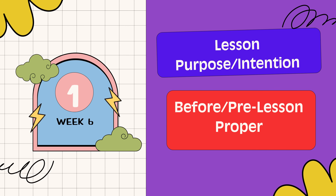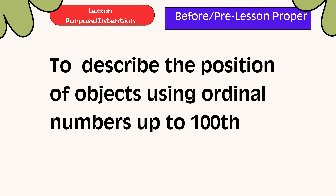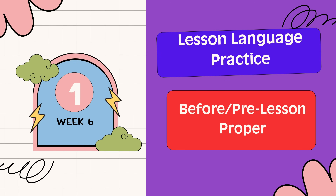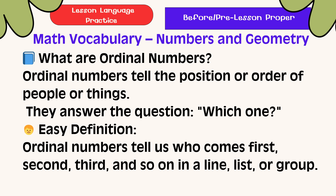Our lesson is to describe the position of objects using ordinal numbers up to 100. Lesson Language Practice: What are ordinal numbers? Ordinal numbers tell the position or order of people or things. They answer the question, which one? For easy definition, ordinal numbers tell us who comes first, second, third, and so on, in a line, list, or group.